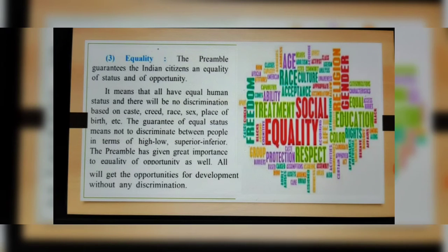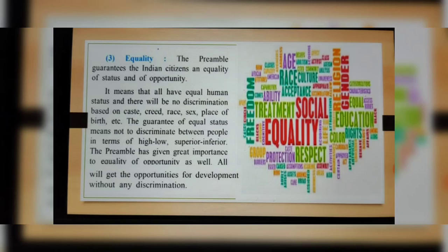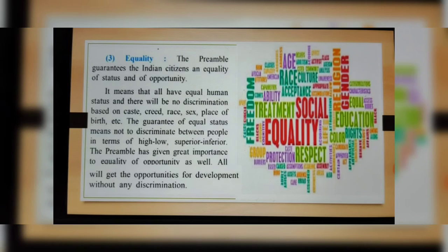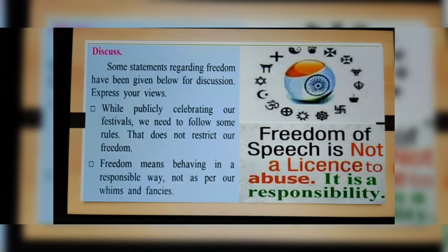Equality. The preamble guarantees the Indian citizen equality of status and of opportunity. It means that all have equal human status and there will be no discrimination based on caste, creed, race, sex, place of birth, etc. Guarantee of equal status means not discriminating between people in terms of high or low, superior or inferior. The preamble also gives great importance to equality of opportunity — all should get the opportunity for development without any discrimination.